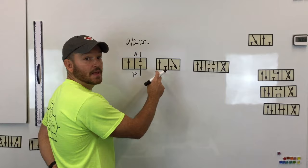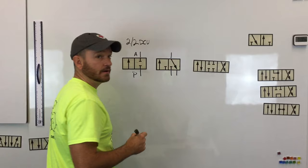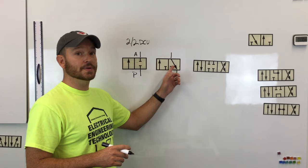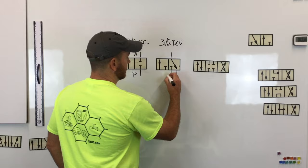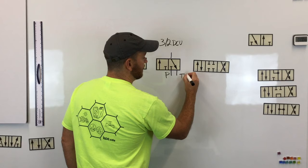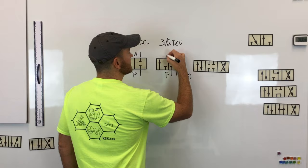This next valve has two positions but three ways associated with it, meaning it has one port here, one port here, and one port here. This would be a three-way, two-position directional control valve, or a three-two directional control valve. The P is on the bottom left, the tank port — sometimes referred to as the reservoir — is on the bottom right, and the top port is always identified as the A port.